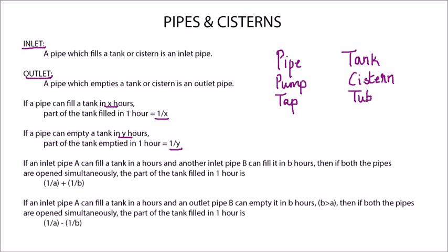If one is an inlet pipe and the other is an outlet pipe provided B greater than A, then the part of the tank filled in 1 hour would be 1/A minus 1/B, the difference between the two.